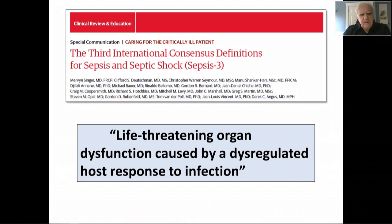Organ dysfunction, as it is defined in the third international consensus definitions framework, is the outcome of sepsis. Sepsis is life-threatening organ dysfunction caused by a dysregulated host response to infection. It's not so much the disease as the consequence of the disease. And so it makes it challenging to think about how we describe this process in terms of biomarkers, because we would be looking at a biomarker for a particular outcome.